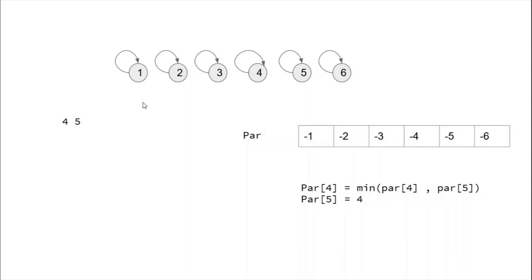Now let's walk through the example. Initially you initialize all elements as singleton sets — each element points to itself, so all values are negative, and the absolute value equals the element itself since each element is its own highest hitting power. So at index 1 we have minus 1, index 2 has minus 2, and so on for 3, 4, 5, 6. This is how you initialize the parent array.